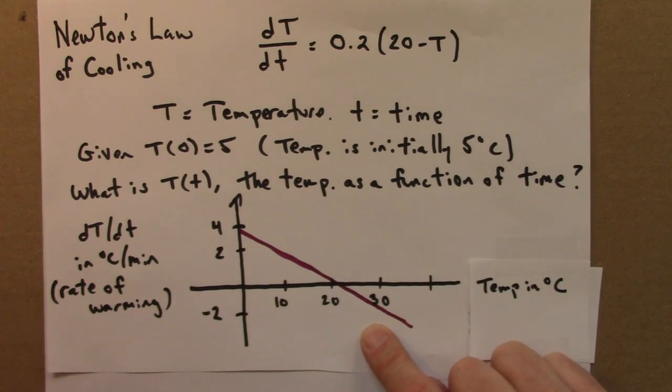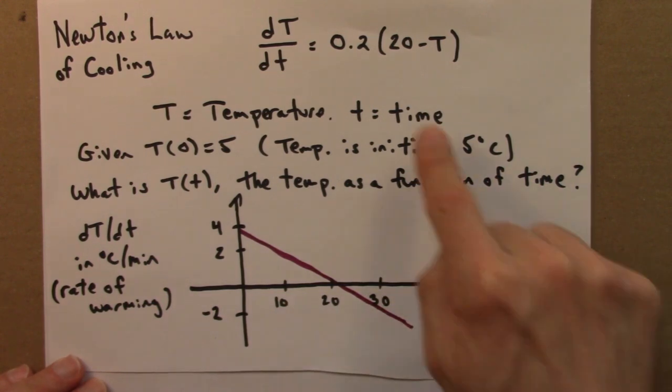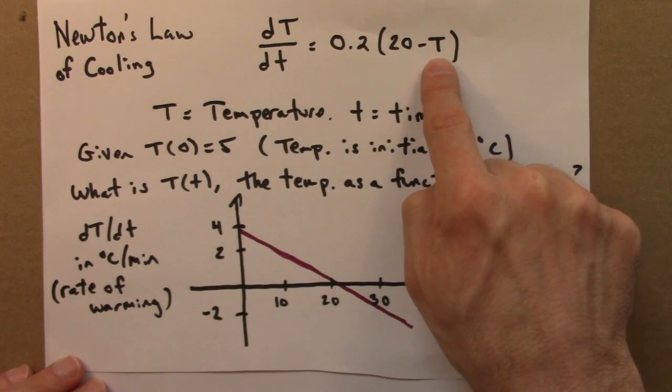So, let's think about what this tells us. The horizontal axis is temperature in degrees Celsius. So, that's T as we vary T.